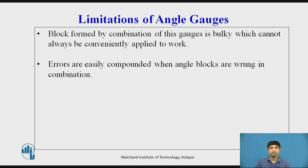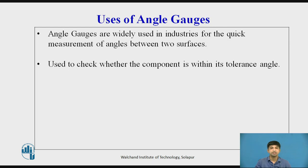Limitations of angle gauges. Block formed by combination of these gauges is bulky which cannot always be conveniently applied to work. The second is that errors are easily compounded when angle blocks are wrung in combination.